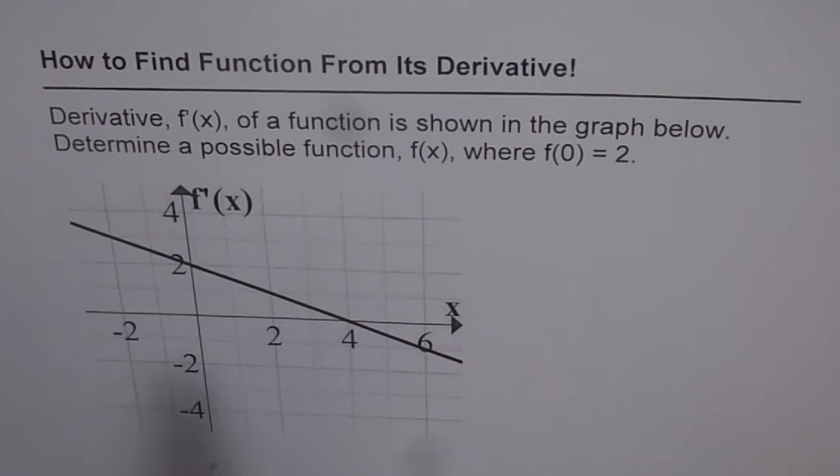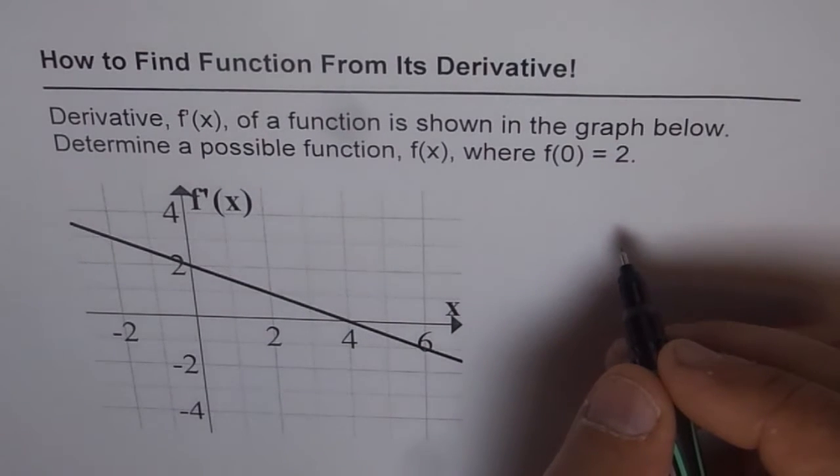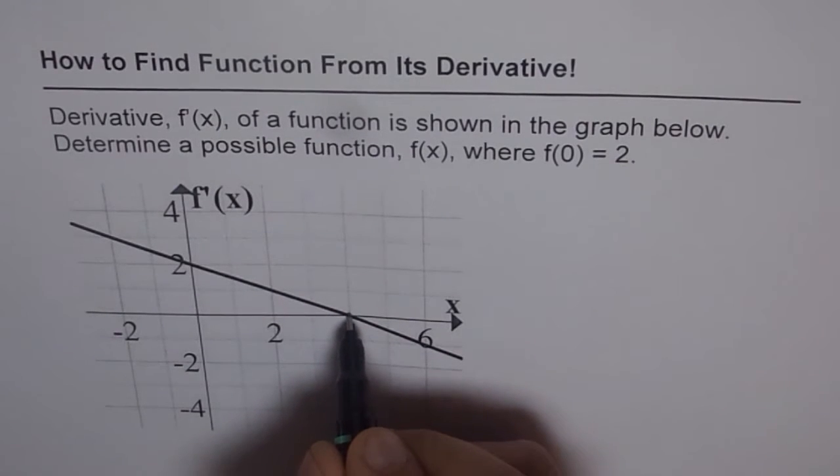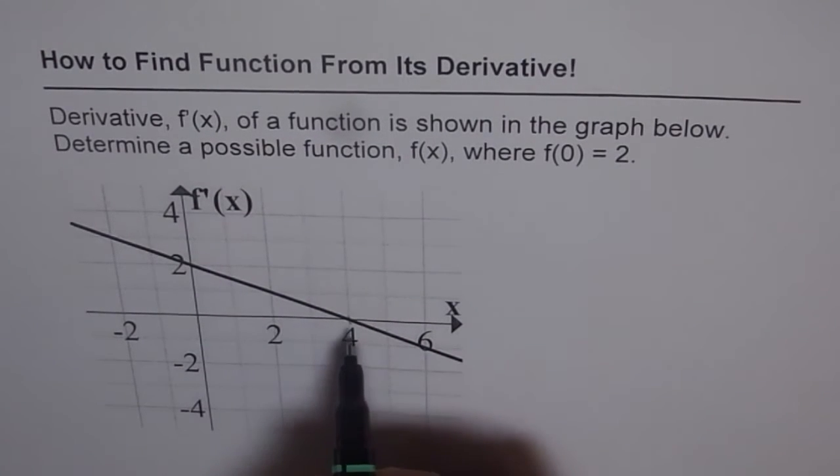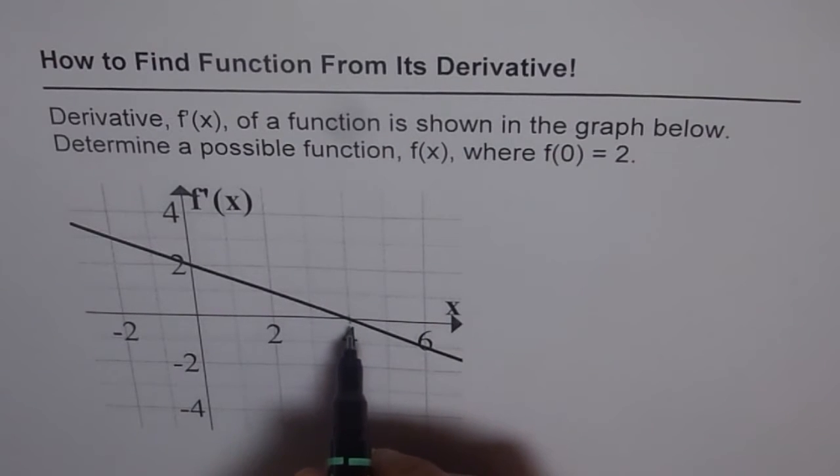So here we have derivative of the function which is a straight line. As you know, straight line means the function should be quadratic. In general, the quadratic equation is ax² + bx + c, so we could start from there. Another thing you notice here is that the derivative is 0 at 4. That means there is a turning point at 4. So the vertex lies at x equals 4.